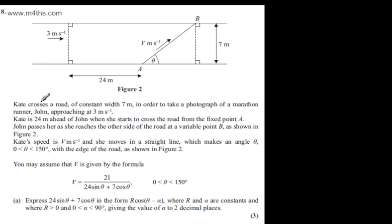This is question number 8. We're told Kate crosses a road of constant width 7 metres in order to take a photograph of a marathon runner, John, approaching at 3 metres per second.